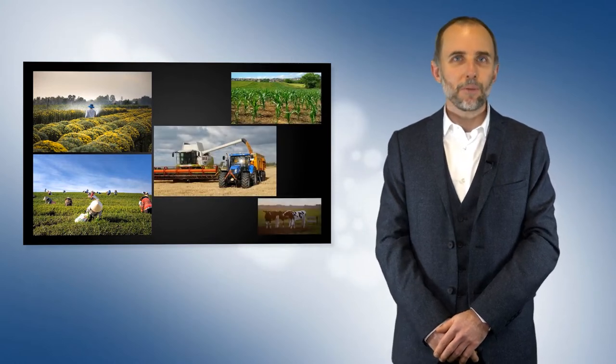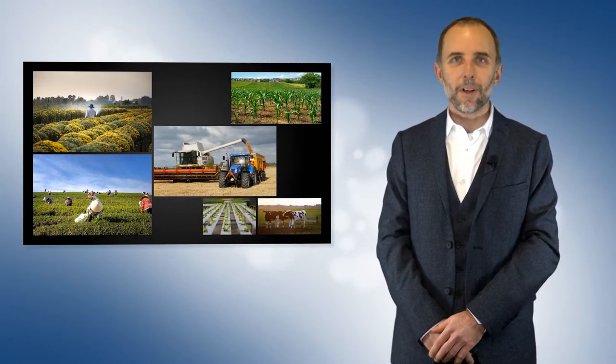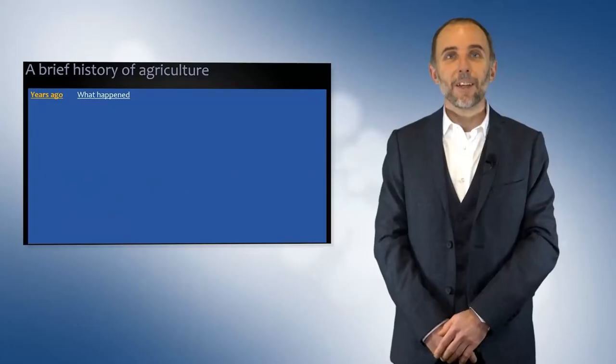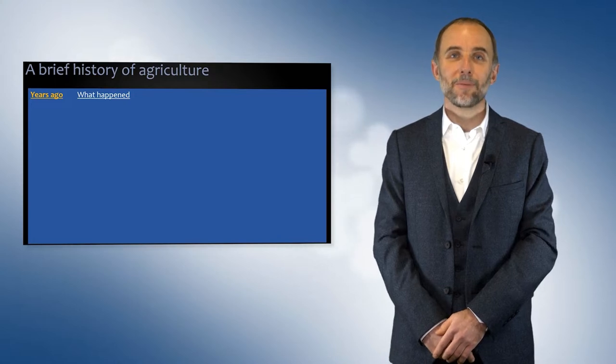Agriculture is all around us, and our food is part of our daily life. But there is huge diversity in our food systems, in the food we eat. So how did we get here? How did our agricultural systems and our food production systems come to be? Let's do a brief history of agriculture.